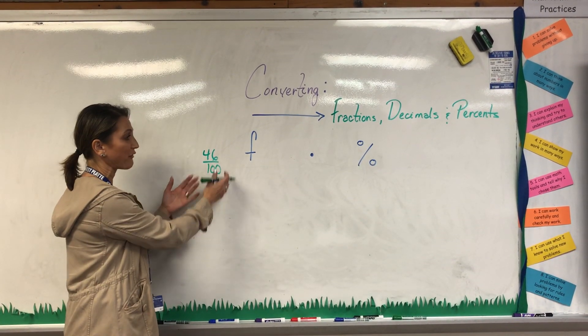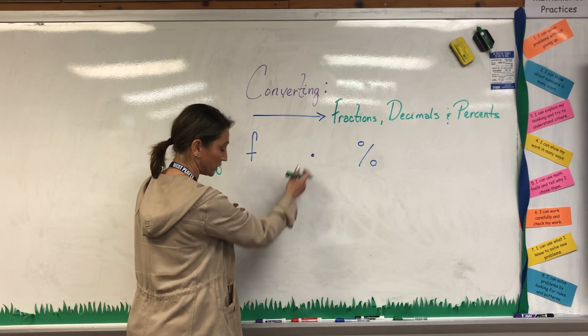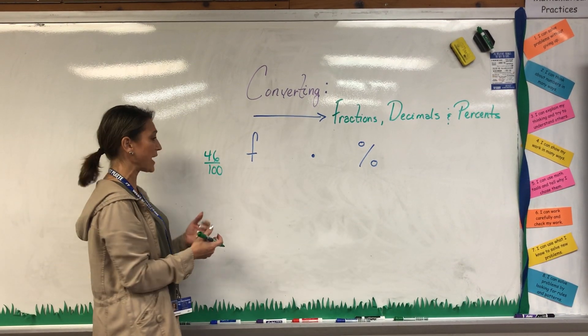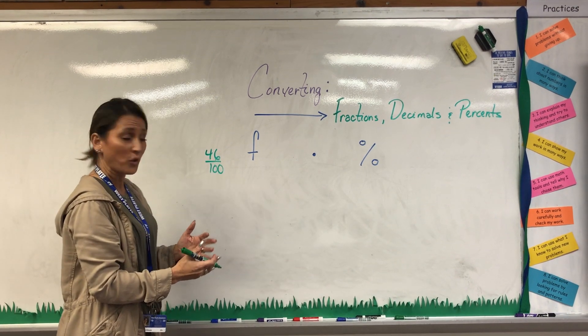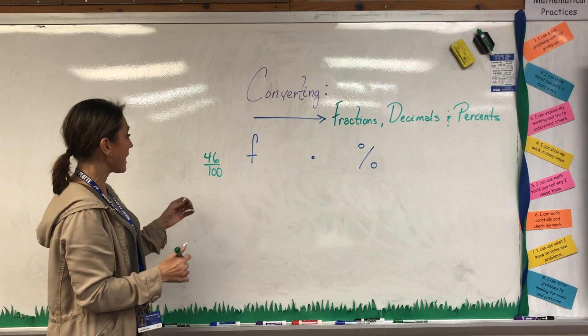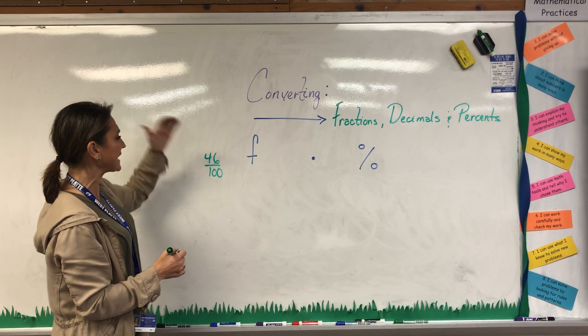Now when I do that and I want that fraction to go to a decimal, it's a very simple process of just looking where the fraction ends, where it states it's at. So I look at this and I see 46 hundredths.